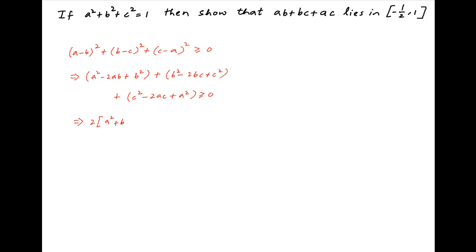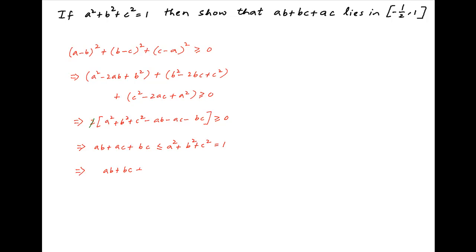This can be written as two times (a² + b² + c² - ab - ac - bc) is greater than or equal to 0. The two cancels and this inequality can be written as ab + ac + bc is less than or equal to a² + b² + c². The right hand side is given to be equal to 1, and therefore we have the result ab + bc + ac is less than or equal to 1. Let's call this Result 1.